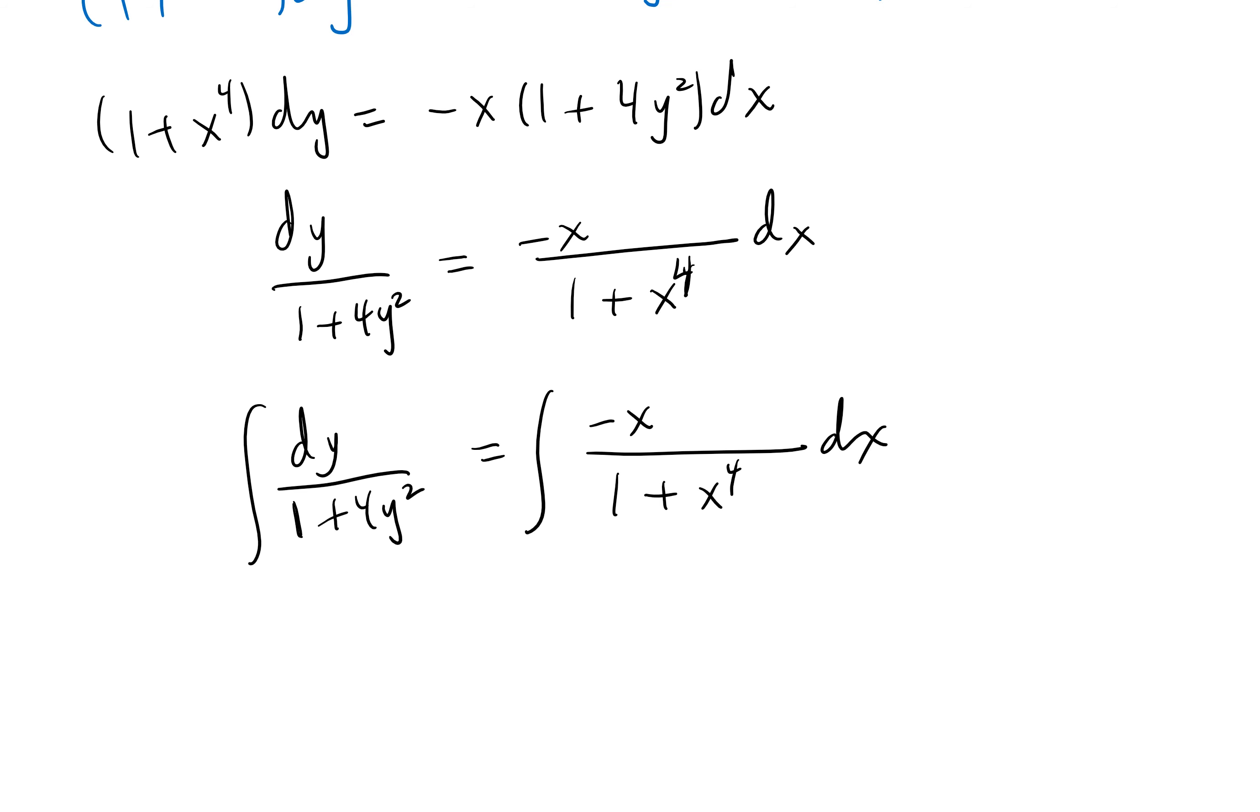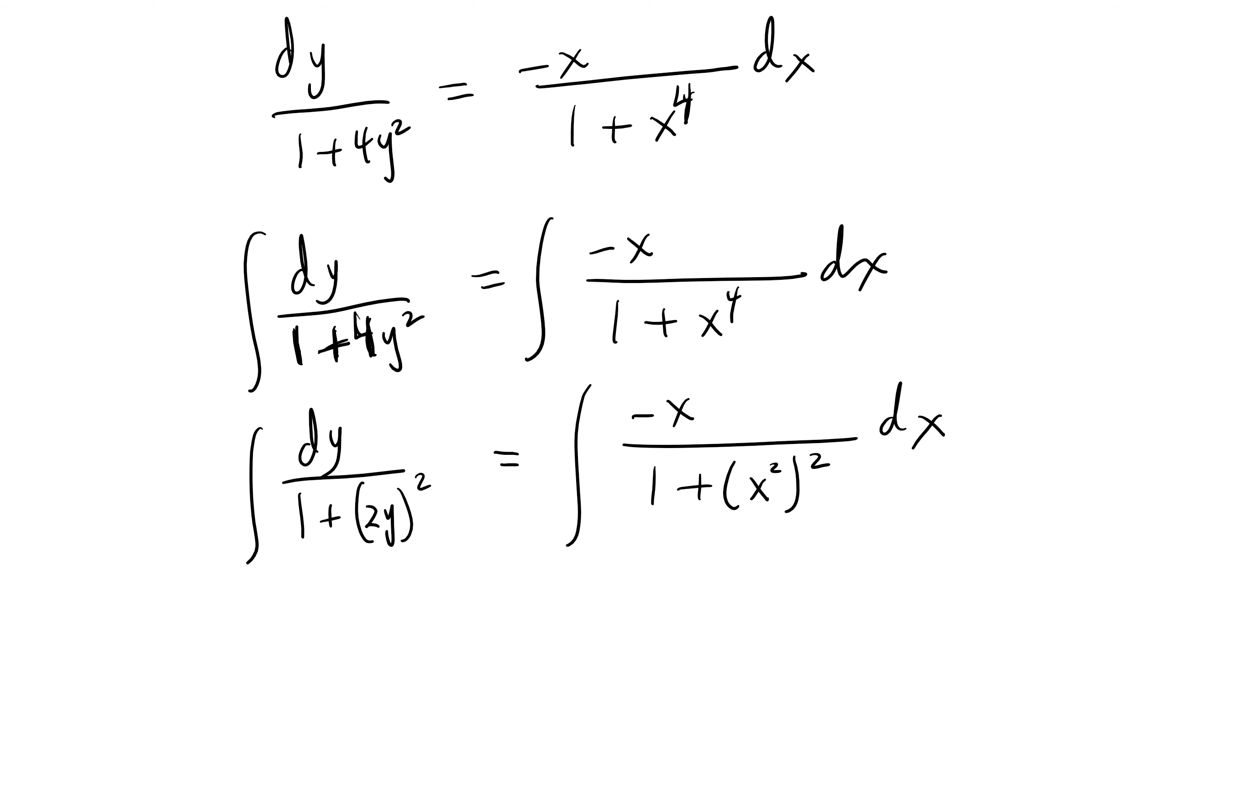Then what do we do next? This looks like arctangent. And this one can be rewritten like so. To integrate the one on the left side, we can use u sub now. For this, u equals 2y, du is 2dy. And I can use another u sub here, u equals x squared, du is 2x dx. That negative can be taken outside. And let's see what is missing. I need a 2 here and I put a half out there. We need 2x dx. You need a 2 here and 1 half out there.